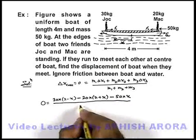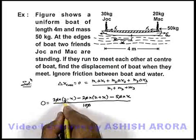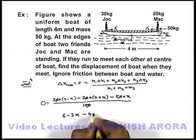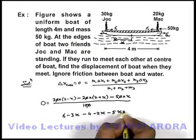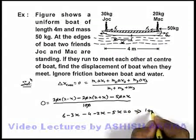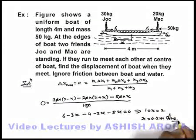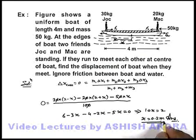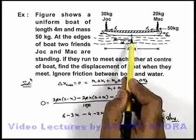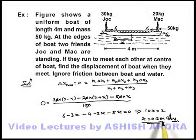Dividing by the sum of the three masses, which is 100, the zero cancels out. On simplifying we get: 30(2 − x) − 20(2 + x) − 50x = 0, which gives 60 − 30x − 40 − 20x − 50x = 0, simplifying to 10x = 2, so x = 0.2 meters. That is the displacement by which the boat is displaced toward the left. If we had assumed the boat moved toward the right, the result would still be 0.2 meters.